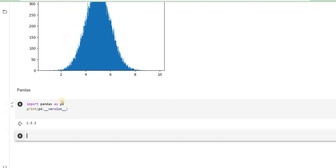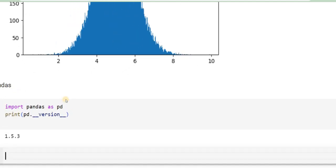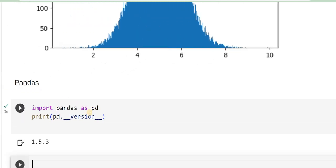I can use import pandas as pd, then print pd dot underscore underscore version underscore underscore close the braces.